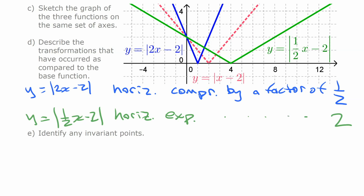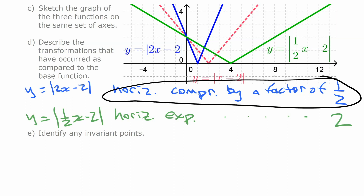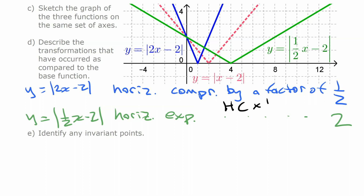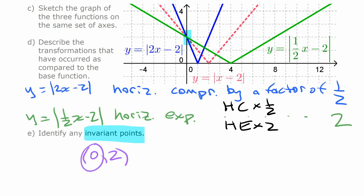The invariant point on the graph is clearly visible at (0, 2) — the only point on the y-axis that doesn't change. This horizontal compression or expansion changes x values, but if x is 0, multiplying by 2 or one-half doesn't change it. So invariant points for horizontal expansions/compressions are where x equals 0.